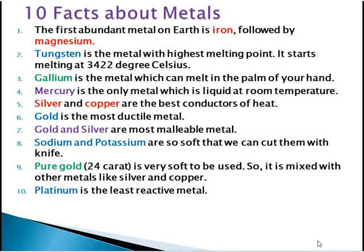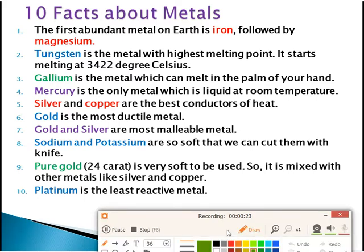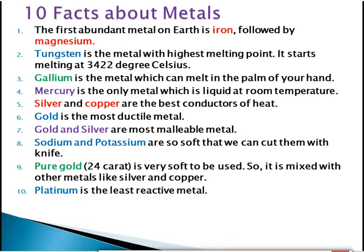The first fact about metals: the most abundant metal in the Earth's crust is iron, followed by magnesium. Iron is the first metal present in large amounts in the Earth's crust. The symbol of iron is Fe and the symbol of magnesium is Mg.